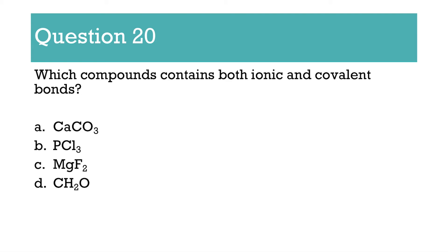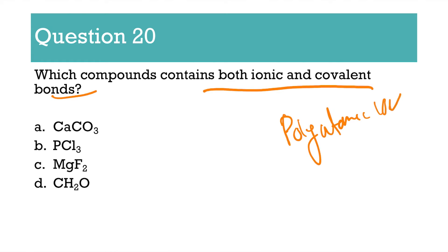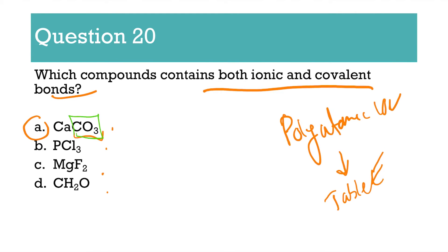Number 20: which compounds contain both ionic and covalent bonds? Whenever you see both ionic and covalent, you should be thinking polyatomic ions, and that means you should be looking at table E. The answer is A — CO3 is on table E, so that is the polyatomic ion. CO3 is held together by covalent bonds, and then CO3, because it has a charge, bonds ionically to calcium.